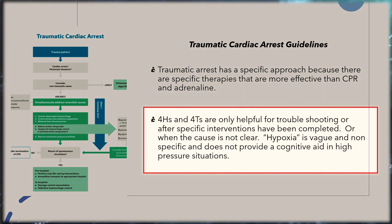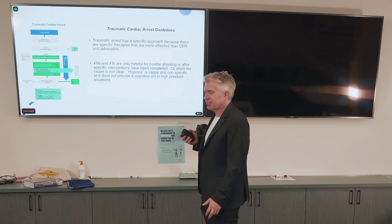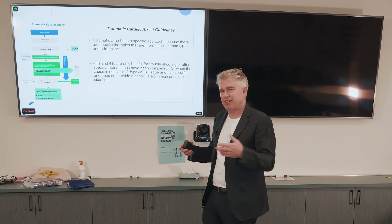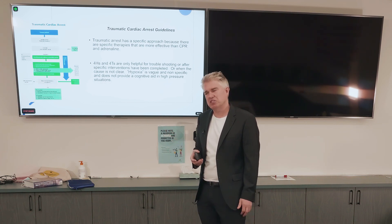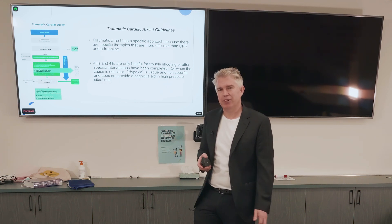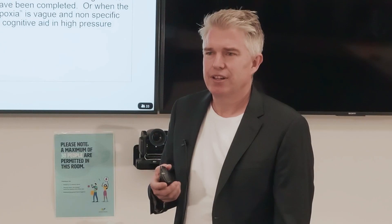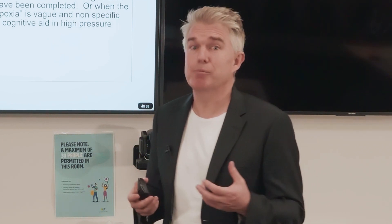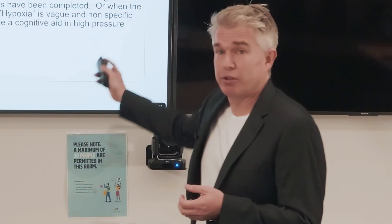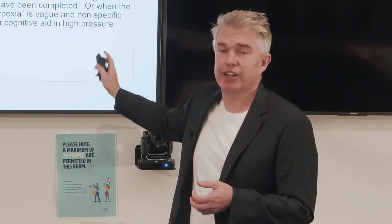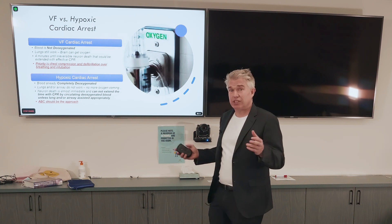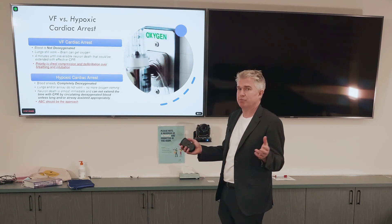In Australia, we use the four H's and four T's to think about reversible causes of cardiac arrest. It's not that helpful because, for example, one of the H's is for hypoxia, but it doesn't tell you what to do about hypoxia in asthma — it just says they probably arrested from hypoxia. It's not descriptive or prescriptive. We need to evolve our resuscitation algorithms to be more sophisticated. We've done that well with trauma, but there are other conditions that need their own algorithm.